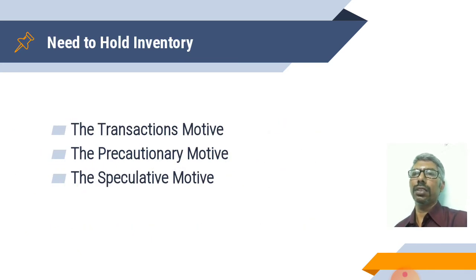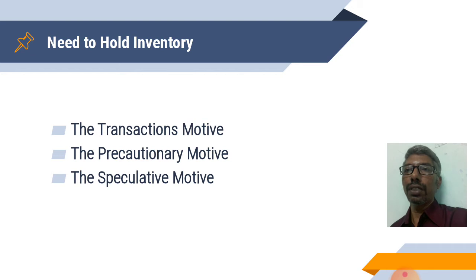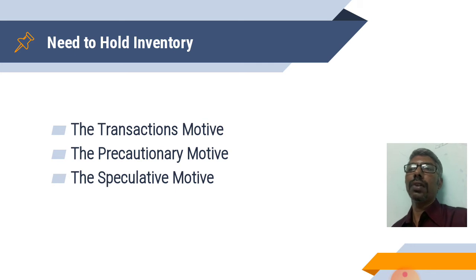Why does a business firm need inventory? There are three motives. The first motive is the transaction motive — for making transactions in the business, it needs material, whether trading or manufacturing, to produce or sell goods to consumers. The second motive is the precautionary motive — to avoid interruptions in business transactions, it keeps material as stock in the warehouse, to supply in an uninterrupted manner for production or sale to consumers. Sometimes business firms also keep material as stock to take price advantages.